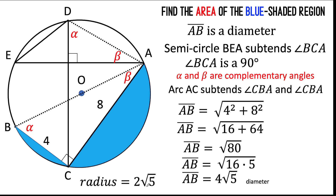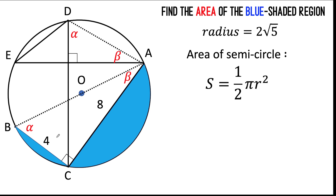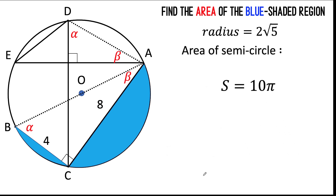Now that we know the radius, we can find the area of the semicircle. The area of a semicircle is one-half the area of a circle, so it's one-half π r squared. We know r is 2√5, so substituting into the formula, the area of the semicircle equals one-half times π times (2√5) squared, which is 20. That simplifies to 10π square units. Let's remember that result.